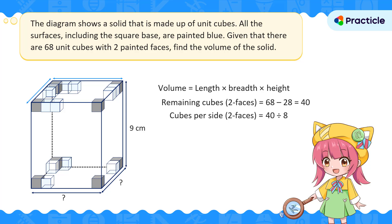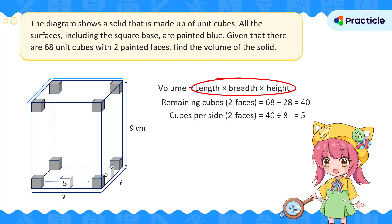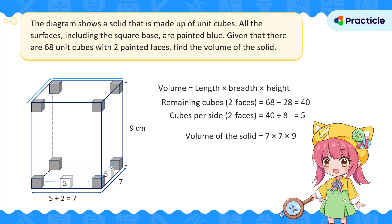40 divided by 8 is 5. We have 5 cubes in between the corner cubes on each side. Before you multiply 5 by 5 by 9, remember that 5 is not the full length or breadth — we need to add the two corner cubes. Each side has a total of 5 plus 2 equals 7 cubes. So the volume is 7 times 7 times 9, which gives us 441 cubic centimeters.